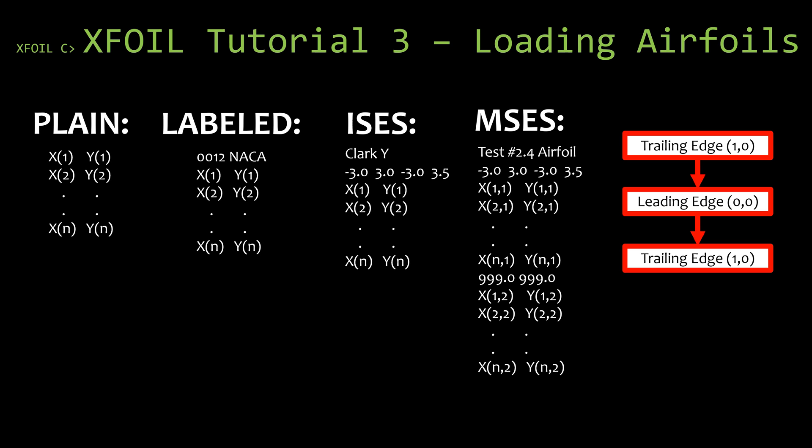I recommend using either the plain or labeled formats. Remember that the leading edge is the origin point, so it has the coordinates 0, 0, and the trailing edge has the coordinate points 1, 0. The coordinate points also have to be in the proper order: it starts at the trailing edge, wraps around the airfoil shape through the leading edge, wraps around the other surface, and finishes at the trailing edge. It doesn't matter if you go clockwise or counterclockwise, but you must start and end at the trailing edge. For more information on file formats and common pitfalls, watch the third tutorial on loading airfoils into XFoil on my channel.